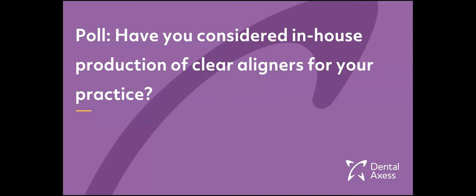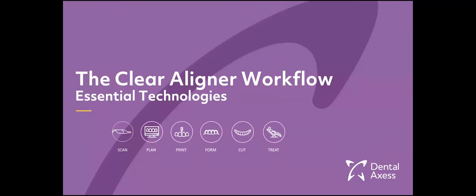We're going to move ahead and look at the different steps for producing clear aligners in-house. End-to-end, this is really the journey: we start with scanning, go ahead with the planning phase, then we can print either the models or the aligners directly. Depending on what method you take, you may also need to thermoform and cut. Finally, we treat the patient. We're going to focus on these different steps and go into more detail.